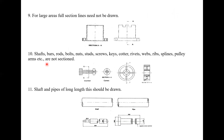For large areas, full section lines need not be drawn — hatching is shown only near the edges. The following components are not sectioned: shafts, bars, rods, bolts, nuts, studs, screws, keys, cotters, rivets, ribs, spokes, and fully solid arms, etc.